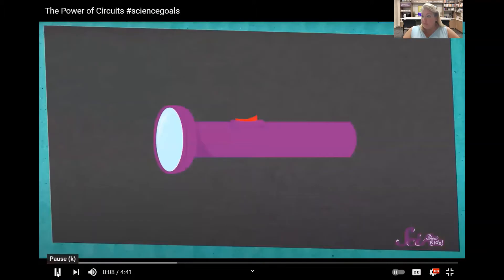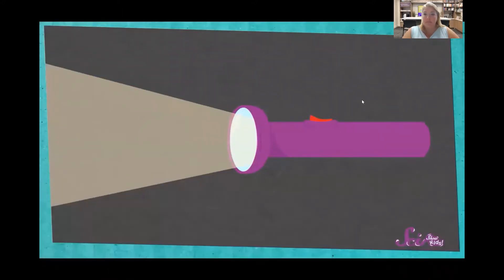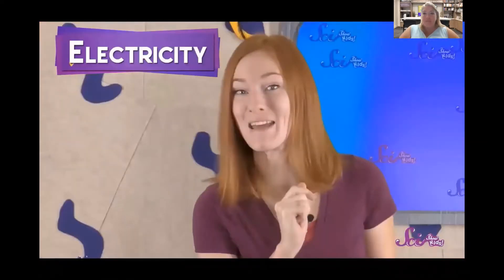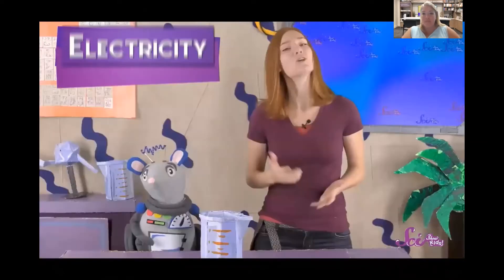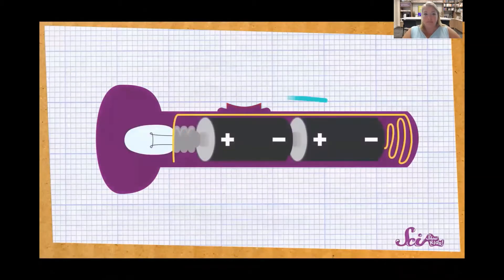Have you ever wondered how a flashlight works? It seems pretty simple. All you have to do is move a switch or press a button and ta-da, the light comes on. But what really makes the light go on? It's electricity that makes the light go on. You probably already know something about the electricity that powers things in your house. The electricity in a flashlight comes from the batteries that are inside.